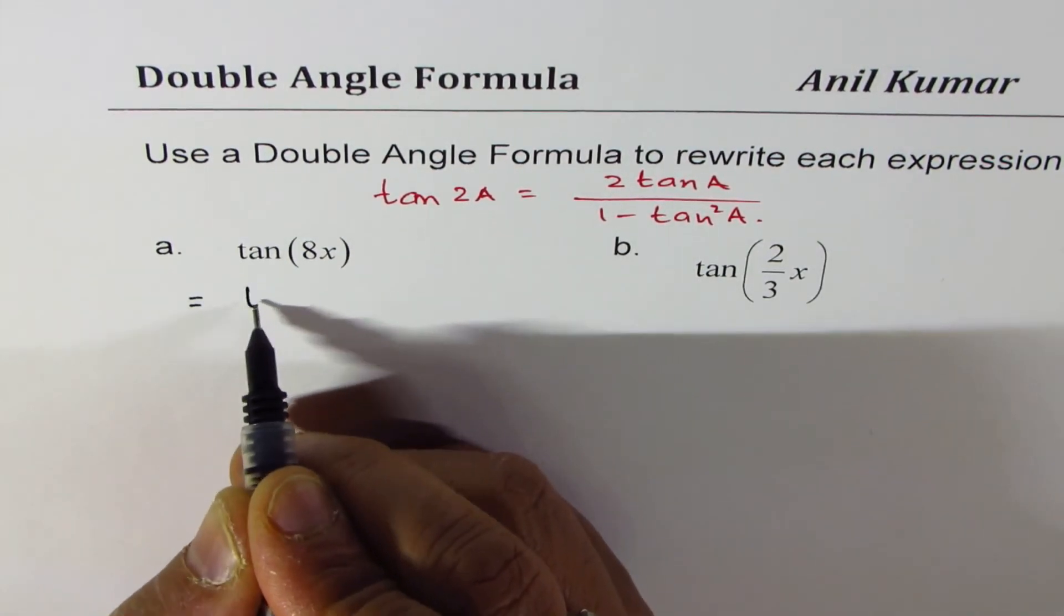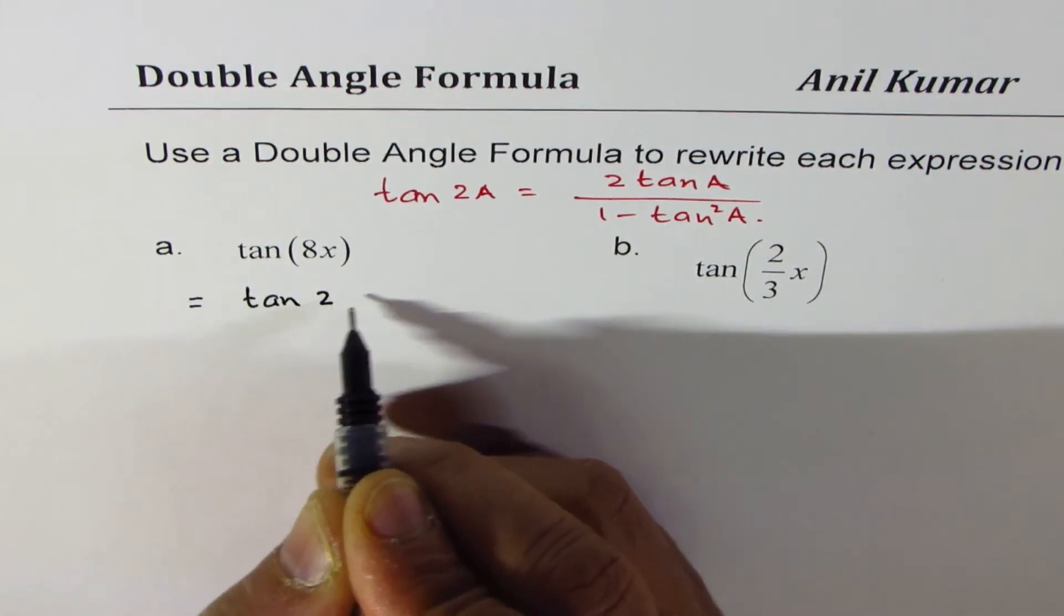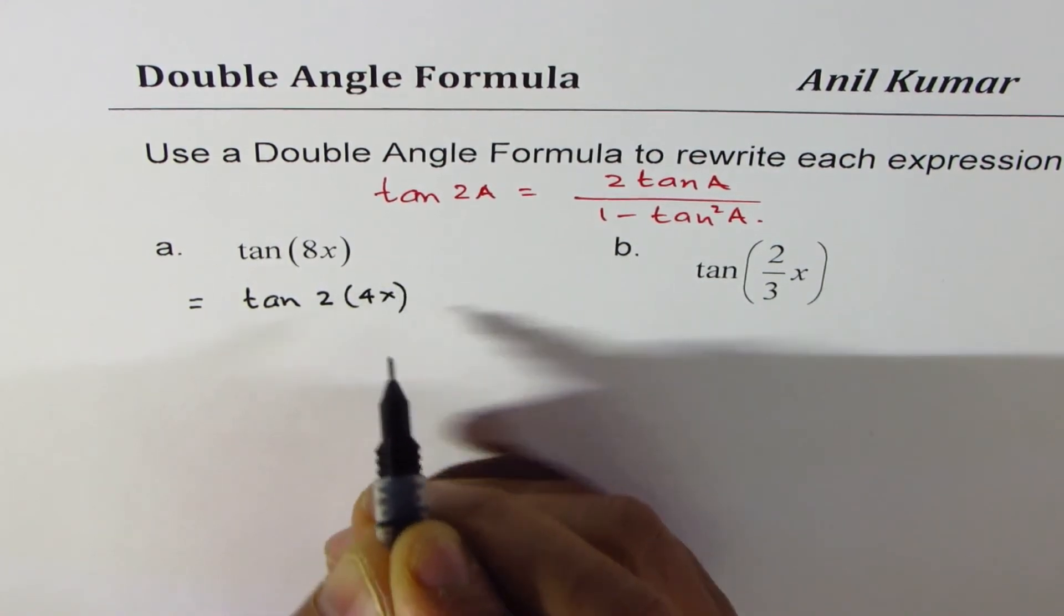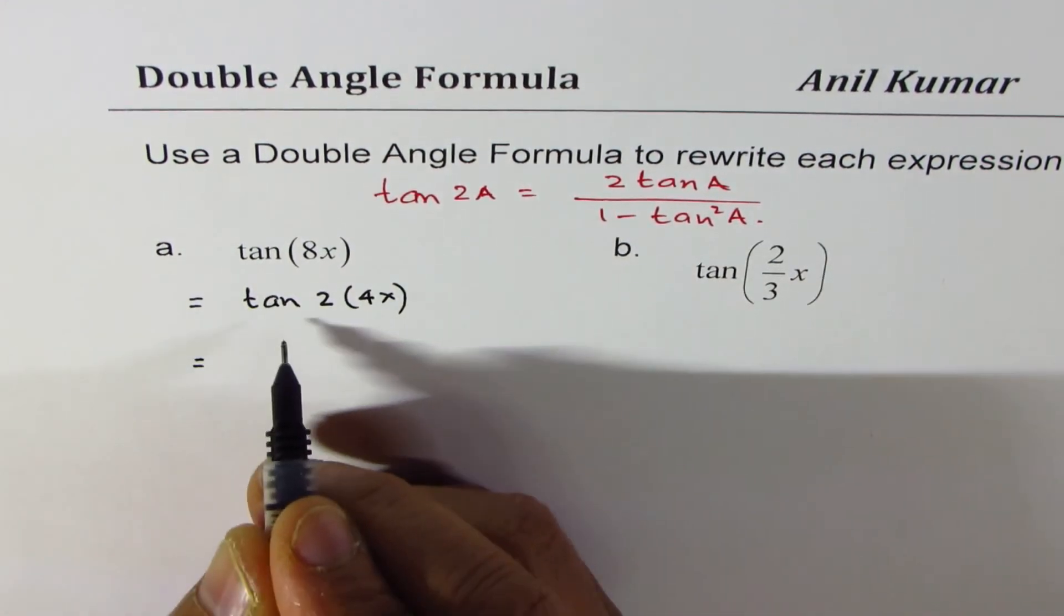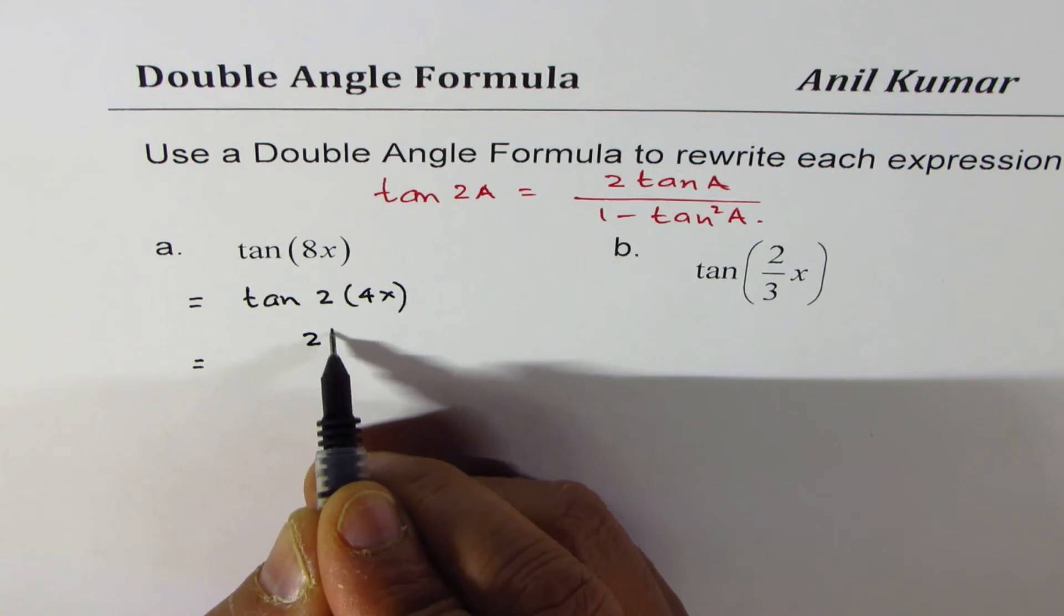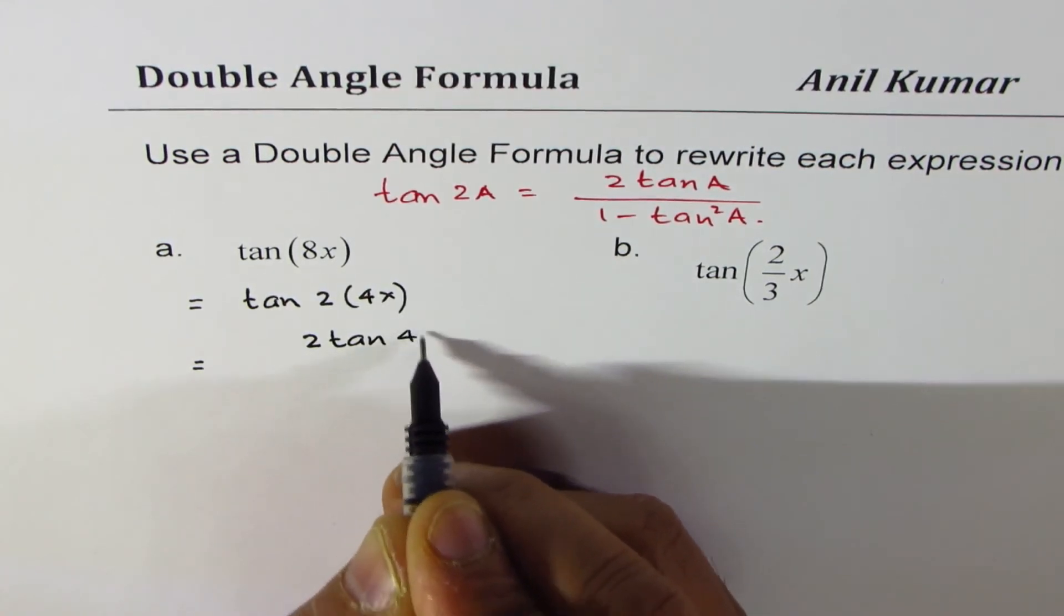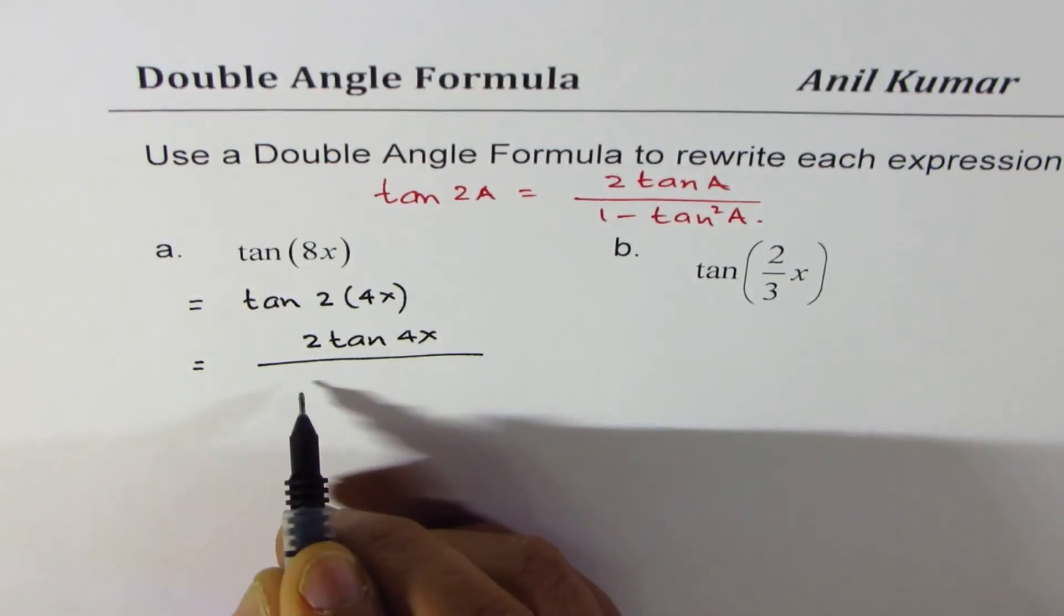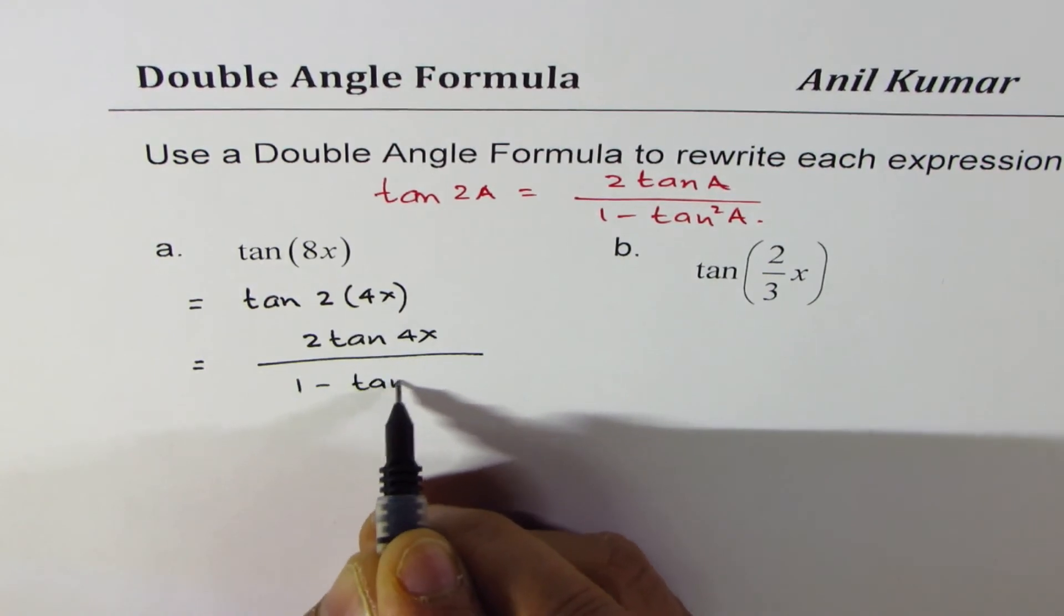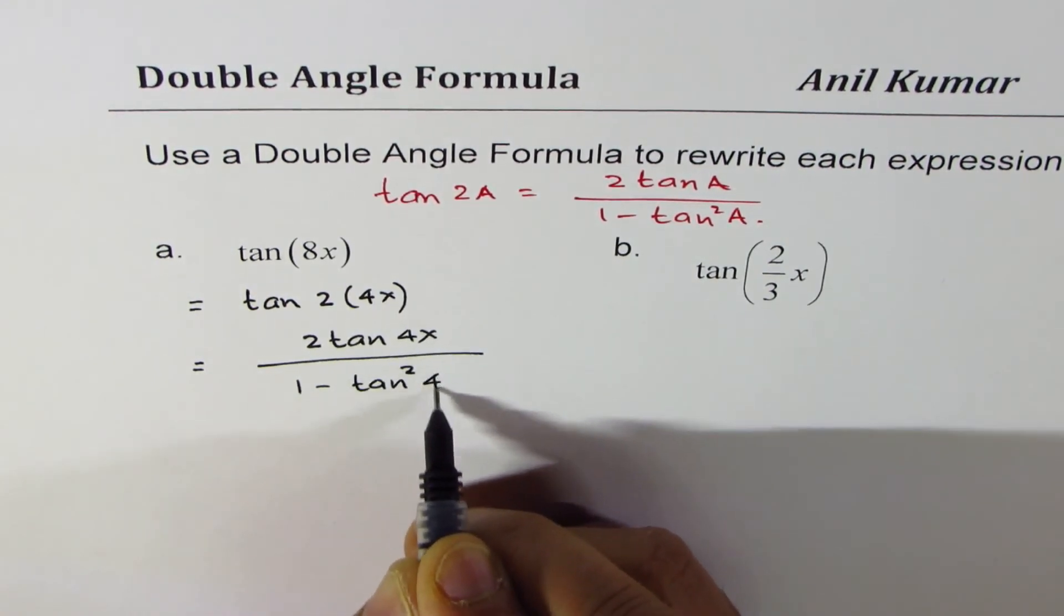We could write this as tan 2 times 4x. Applying the formula, we could write this as 2 times tan 4x divided by 1 minus tan square 4x.